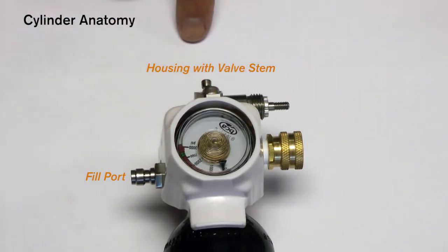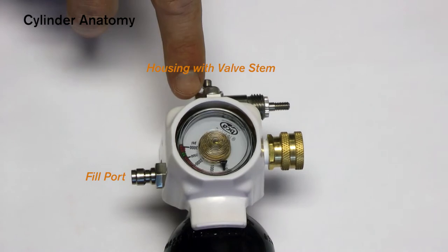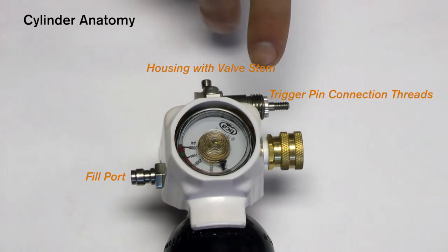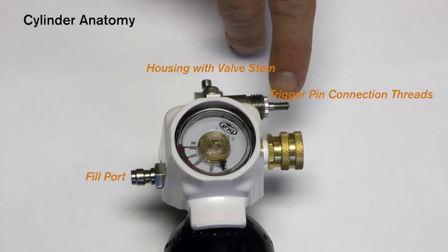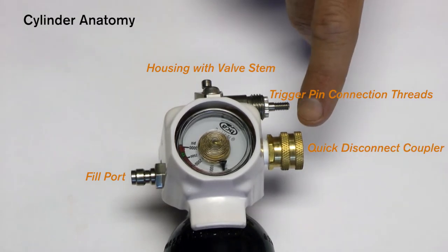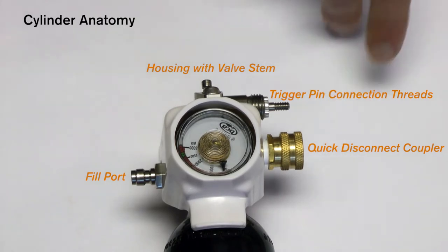At the top here we have the housing of the cylinder trigger mechanism, which contains some hex screws as well as the valve stem, the trigger cable cover, the threads for that, and your trigger pin threads. Lastly, we have our gold quick disconnect coupler, which is where you hook up your air hose.